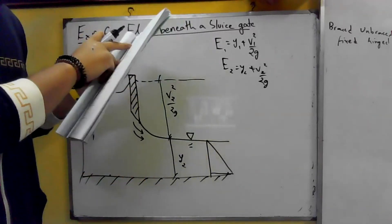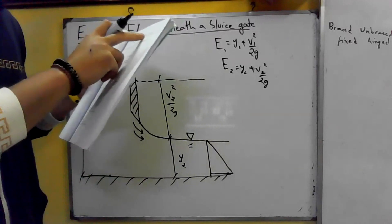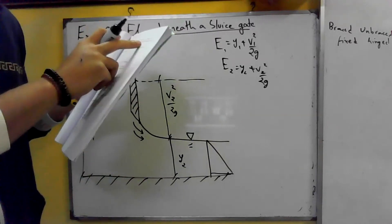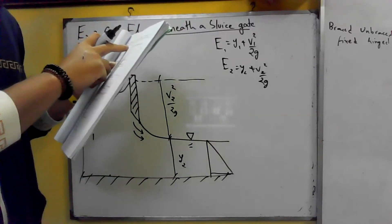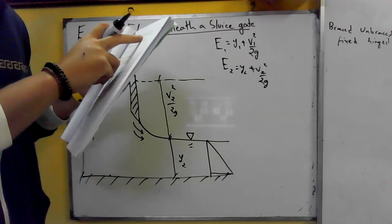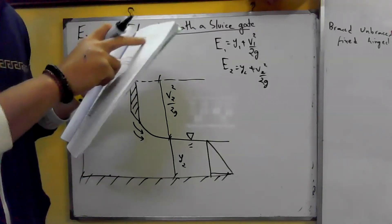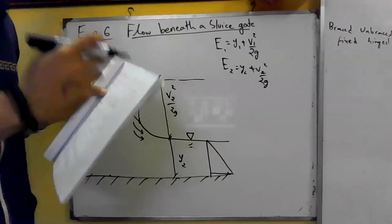The pressure distribution on the gate cannot be hydrostatic, as the pressure must be atmospheric at both the upstream water level and at the point where the jet springs clear of the gate.